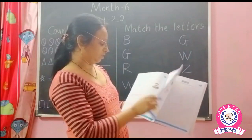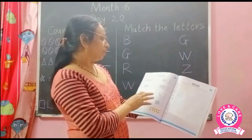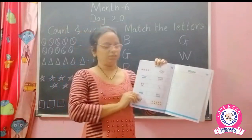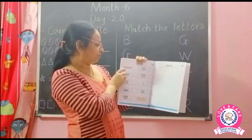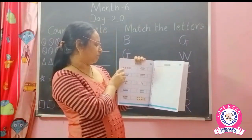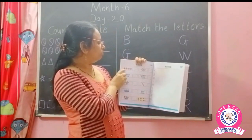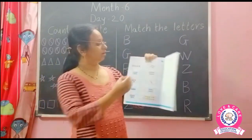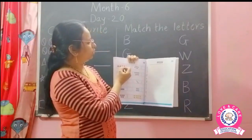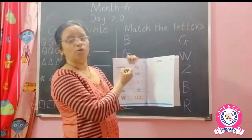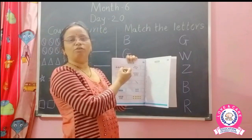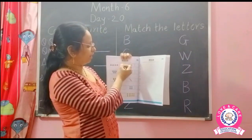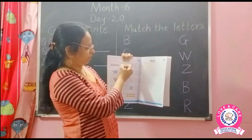Now next page first, okay. Count and write the correct number. So please count it. First box — there are gift boxes. So count the gift boxes everyone. 1, 2, 3 and 4. How many boxes? 4. So write number 4, okay.